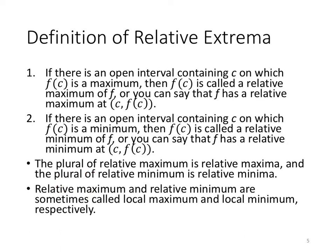A little bit of grammar: the plural of relative maximum is relative maxima, and the plural of relative minimum is relative minima. So: extrema, maxima, minima — we'll use these terms. Relative maximum and relative minimum are sometimes called local maximum and local minimum respectively, and that's just the whole idea of the neighborhood — it's local rather than relative. Relative to your location, so it's local.